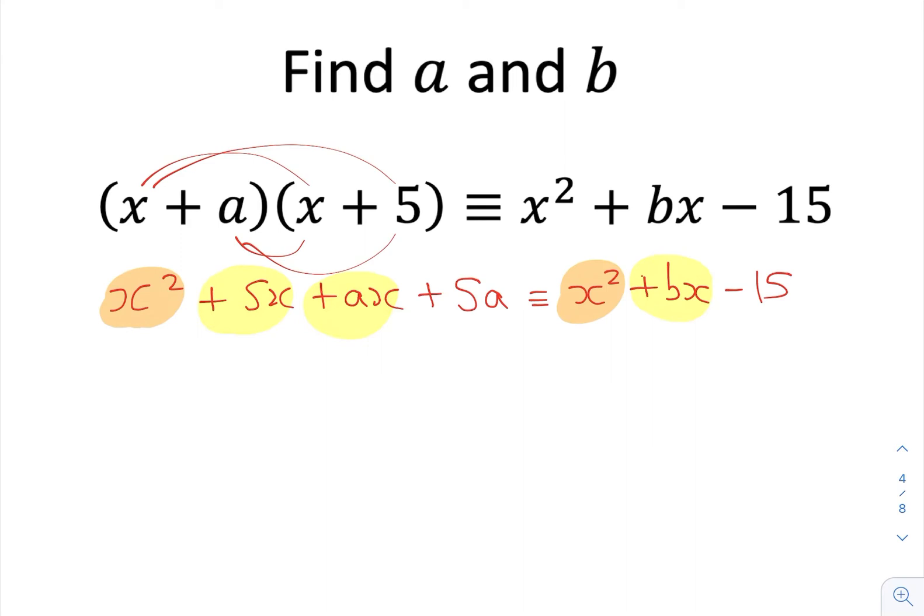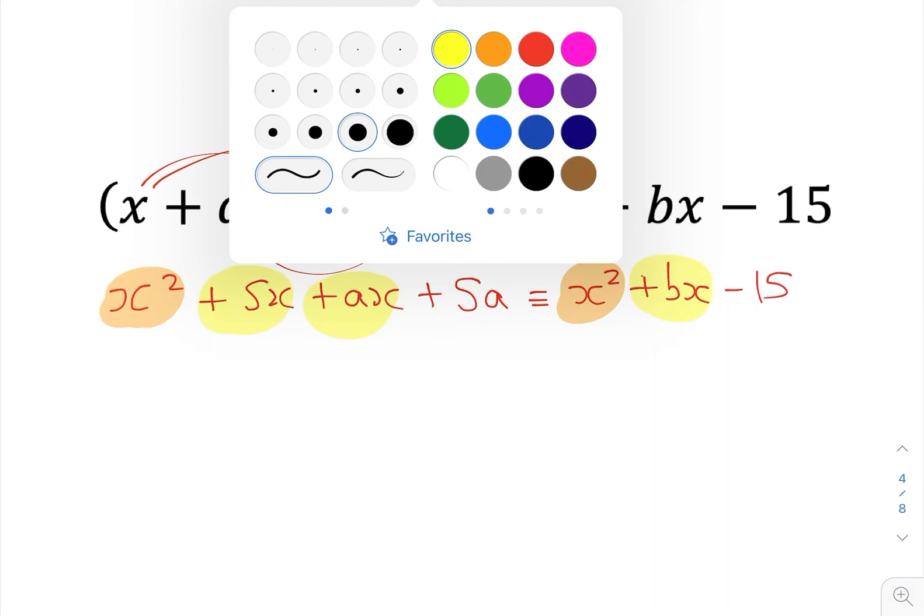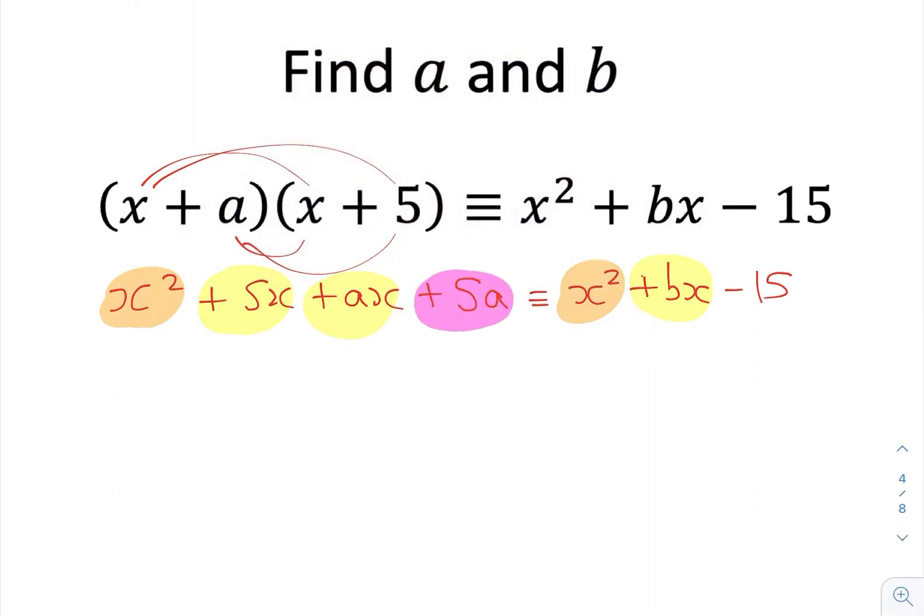But what I can do something with is the numeric terms that are on the end. So if I highlight these, I can do something with this one, which is that I know that 5a is equal to negative 15. So if I know that 5a is negative 15, then dividing both sides by 5 tells me that a is negative 3.